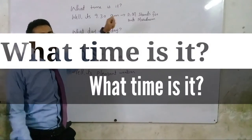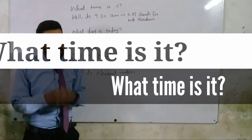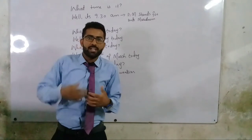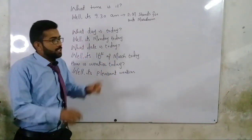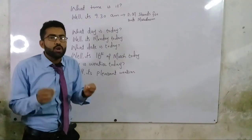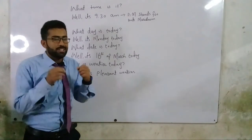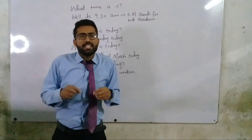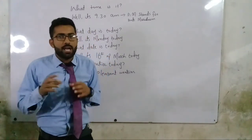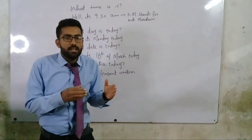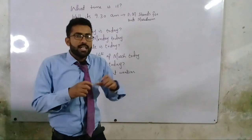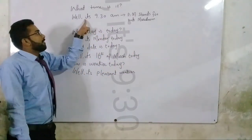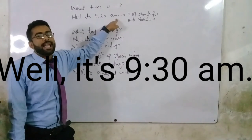For inquiring the time, we use 'What time is it?' Many people misuse this — they say 'What is time?' or 'What is it time?' — but the correct form is 'What time is it?' As with WH questions, the answer begins with 'well': 'Well, it's 9:30 a.m.'